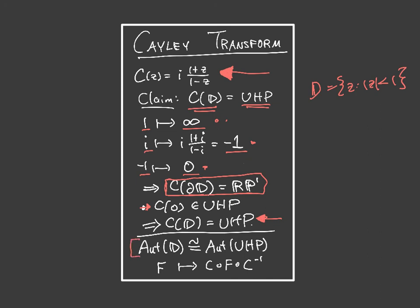You also get an isomorphism of automorphisms. Automorphisms of the disk refer to fractional linear transformations that send the unit disk onto itself, and this will be isomorphic to automorphisms of the upper half plane. Via conjugation, you send F (an automorphism of the disk) to C inverse F C, and you get an automorphism of the upper half plane, and you can easily reverse this map. So this gives one description of the automorphisms of the disk, but we're going to go on to give a more concrete description that is useful in going back and forth between the two worlds of the disk and the upper half plane.